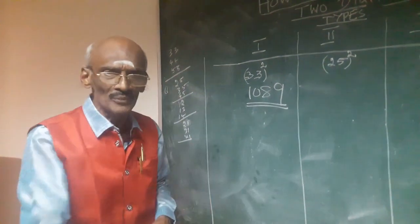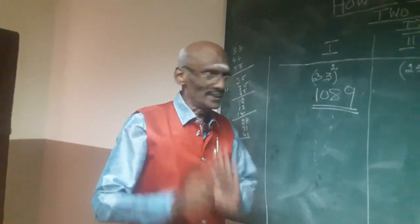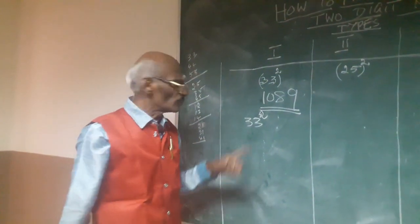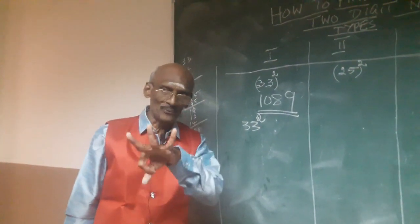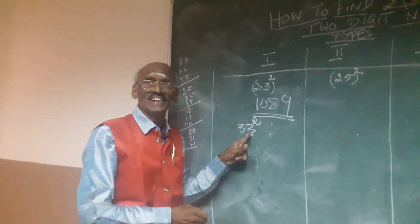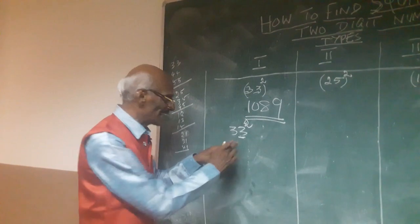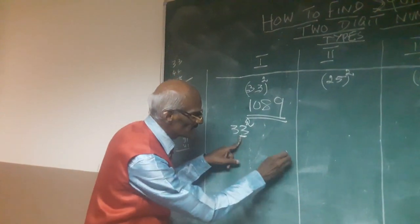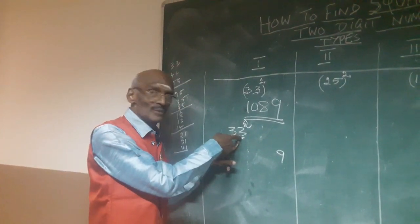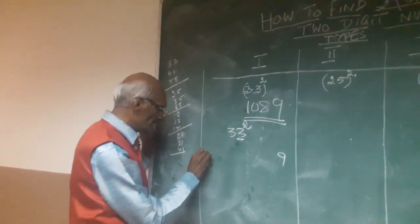There are three steps involved in this shortcut method. To find 33 squared, follow three steps. Step one: take the last digit. The last digit of 33 is 3. Three into three equals 9. Write the answer separately — 9. First step is over.